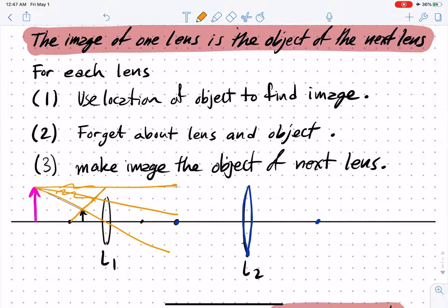But to this lens over here, it doesn't know that. All it sees is these rays coming out and they look like they come from that point. That's why we can treat them one at a time and we get to ignore this first object and that lens. We can just focus on this.